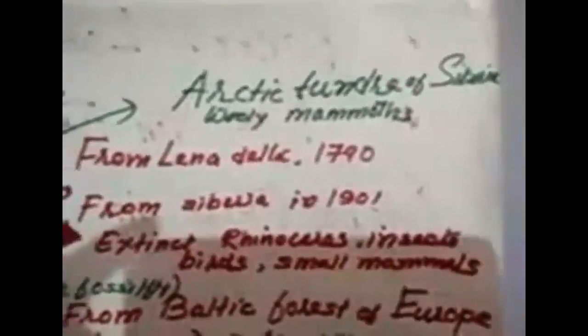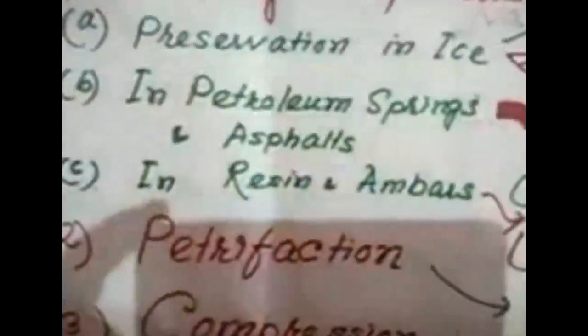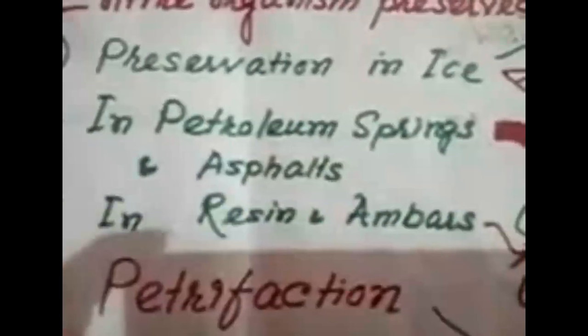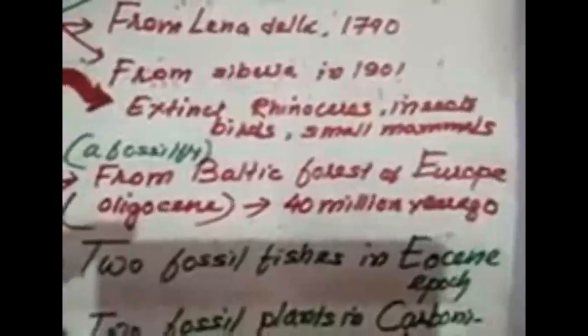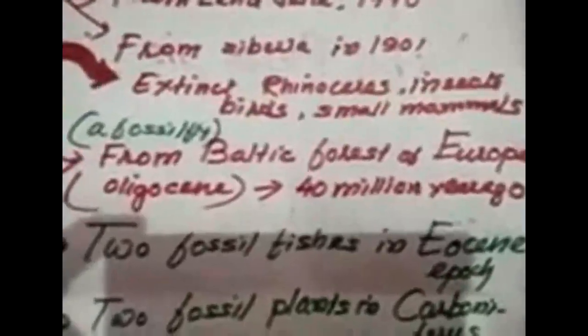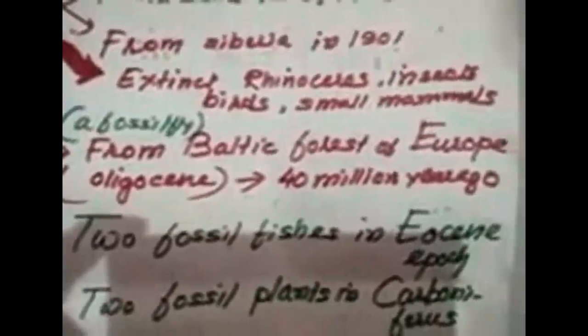In petroleum springs and asphalt, when some organisms like rhinoceros and small mammals cross petroleum springs or pools of viscous asphalt or tar, they actually get entombed. In this case, the entombed organism is preserved as a fossil.